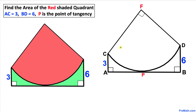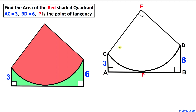Welcome to PreMath. In this video tutorial we have this red quadrant as you can see in the figure. Line segment AC is 3, line segment BD is 6, and point P is a point of tangency. We are going to calculate the area of this red quarter of a circle. Note that this figure may not be 100% true to scale.